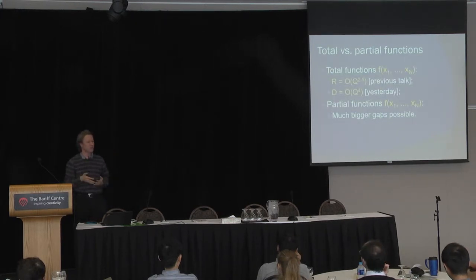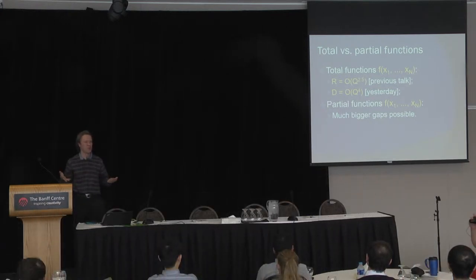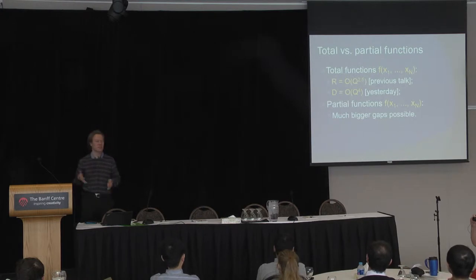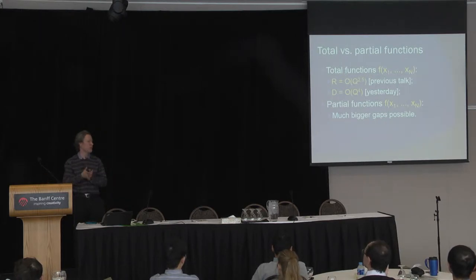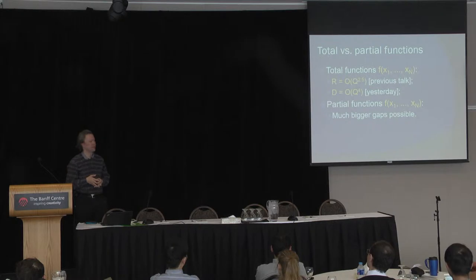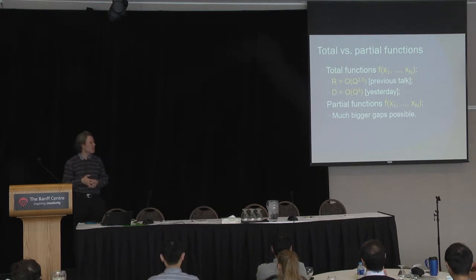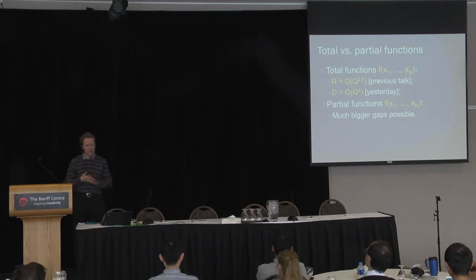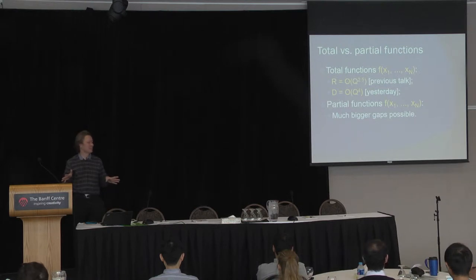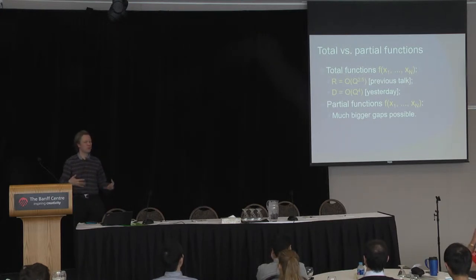As you know from the previous talk, we can ask this question either for total functions or for partial functions. If we consider total functions — computational problems where the correct answer must be defined for any input data — then the previous talk showed the biggest known gap between randomized and quantum complexity is power 2.5. And yesterday I described the power 4 gap between quantum and deterministic. Now if we go to partial functions, we can define them so that we leave out all inputs on which the quantum algorithm doesn't do well, and we can get really huge gaps. This talk is about how huge they can get.